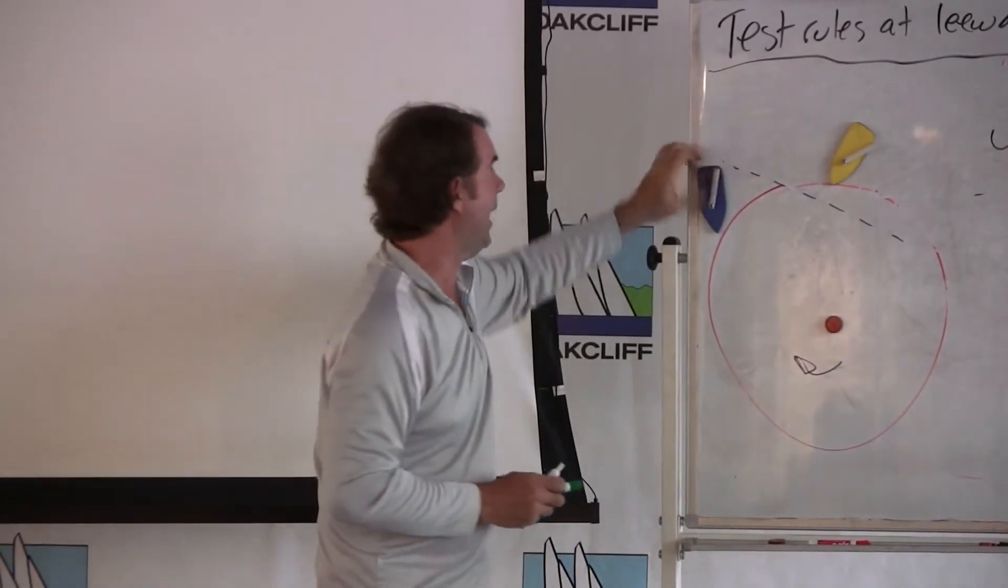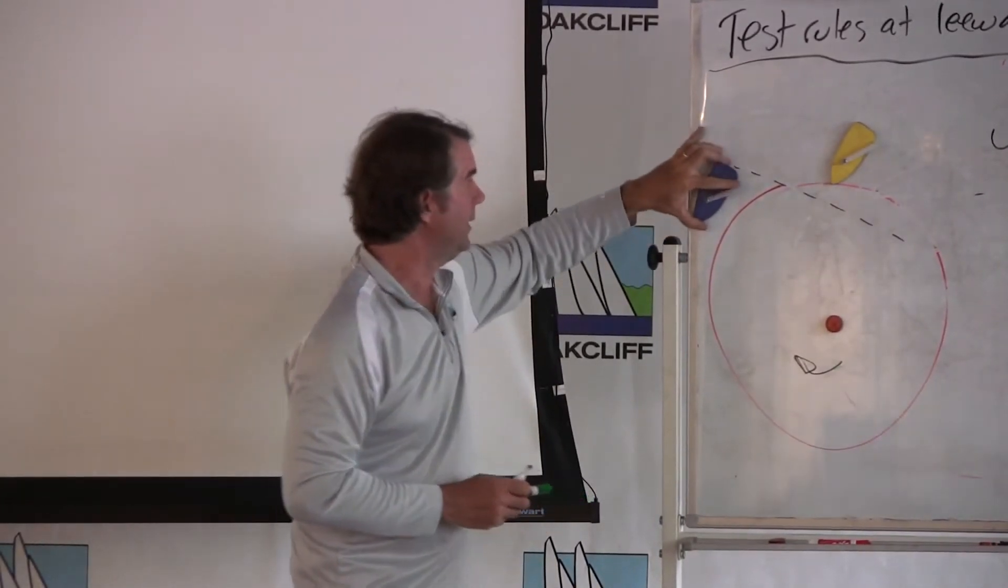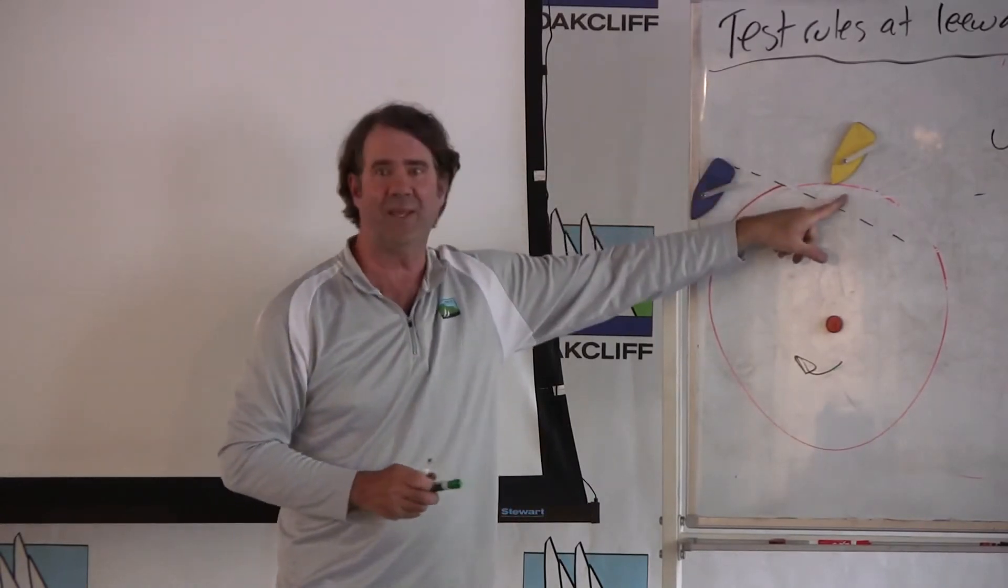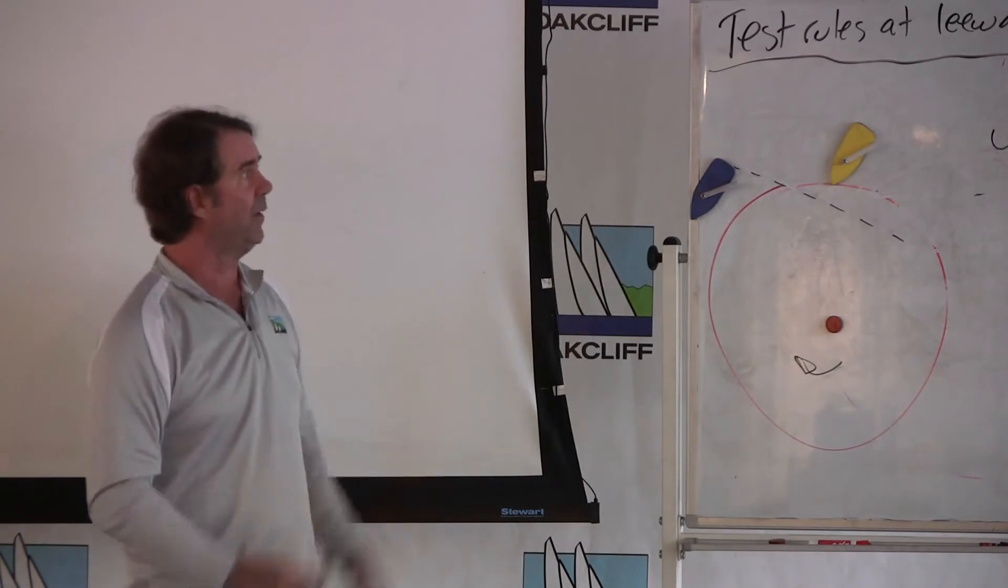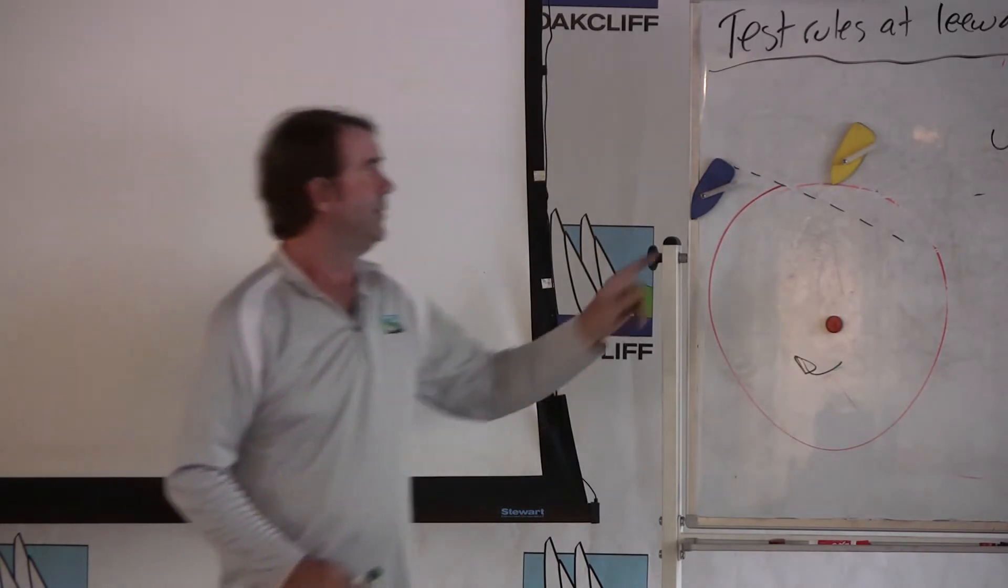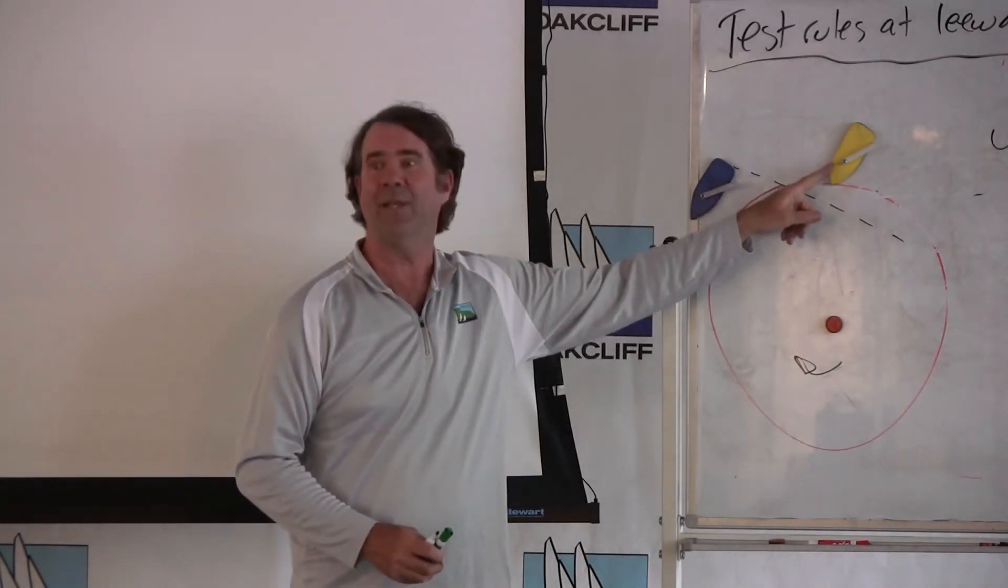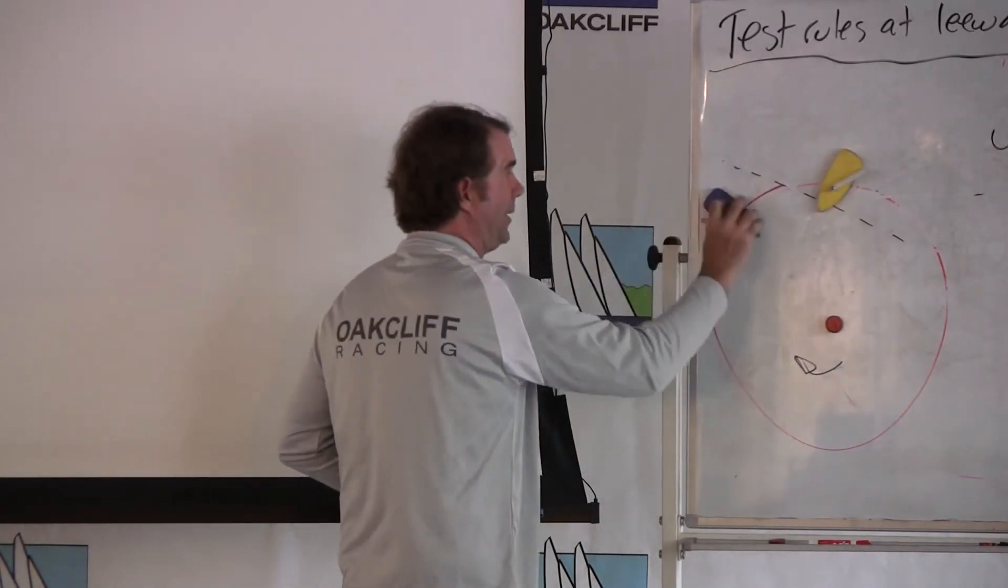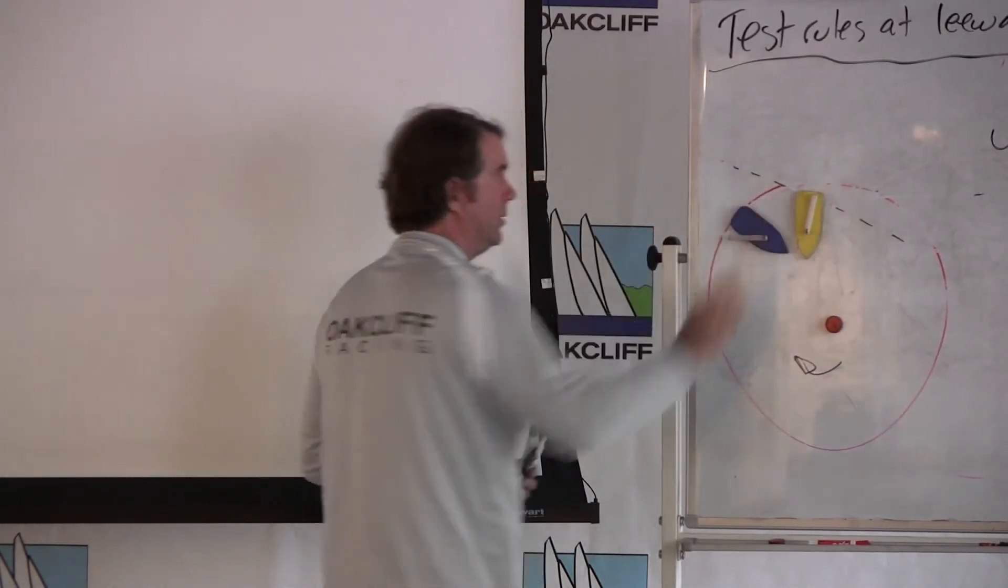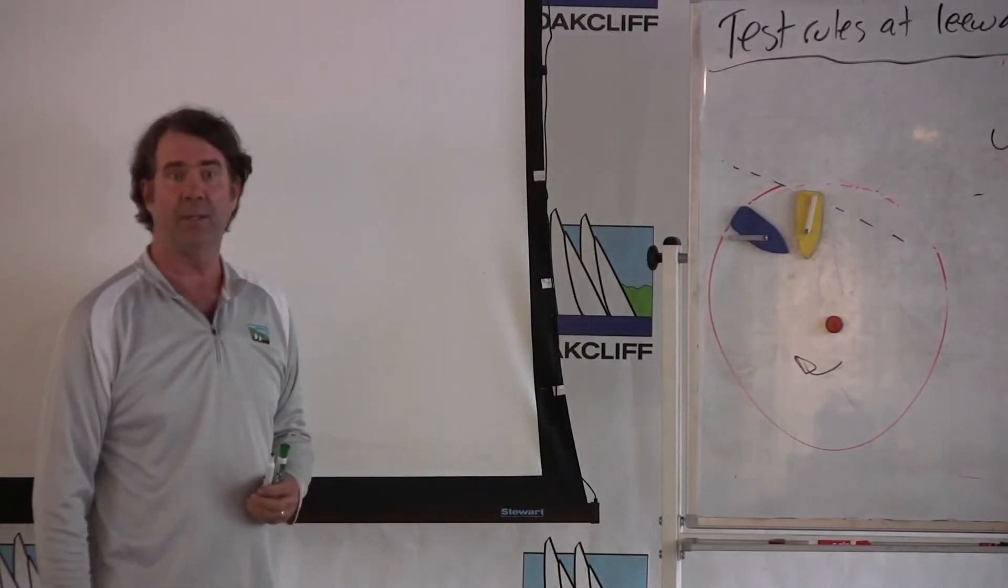But the test rules is just the opposite. The test rules say, as soon as one boat goes in and turns on that light, turns on rule 18, the question is, are they overlapped? The answer is no. They're not overlapped, therefore the first boat in gets mark room. So if blue were to jibe here and cause a kerfuffle here, that would be a penalty on blue.